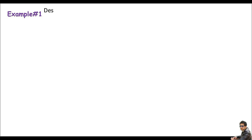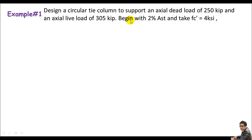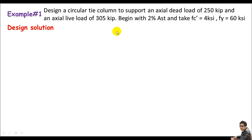I'll do Example 1. We are asked to design a circular tie column to support an axial dead load of 250 kip and an axial live load of 305 kip. We are also informed to begin the design with 2% Ast. Also, fc′ is 4 ksi (concrete strength) and the steel strength fy is 63 ksi. All terms are clear, nothing complicated, so I'll go straight into solutions.